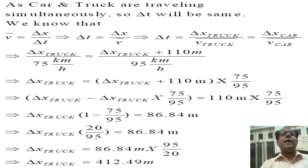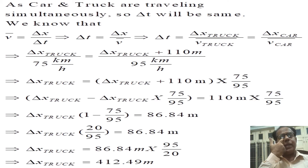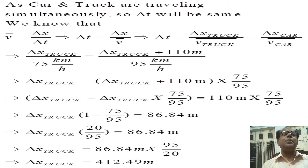As the car and truck are traveling simultaneously, Δt will be the same — the time interval Δt will be the same for both. We know that V_average equals Δx over Δt. This implies that Δt equals Δx over V_average.